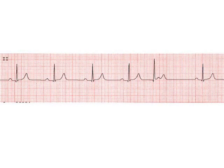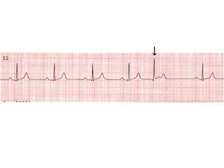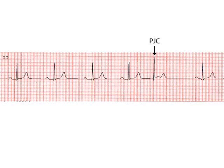The next rhythm strip looks fairly normal for the first several beats, and then you'll see an early beat. However, the early beat still has a narrow QRS complex, but there's no P wave before it. The first, second, third, fourth beats look fine, and then the next one is early. This would be a premature junctional complex — junctional because it's still narrow, and we don't see any P waves, so we know this is not coming from the atrium. There's another example of a PJC further down the strip.